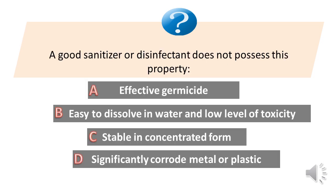A good disinfectant does not possess this property. A. Effective germicide. B. Easy to dissolve in water and low level of toxicity. C. Stable in concentrated form. D. Significantly corrode metal or plastic. Answer is D. Significantly corrode metal or plastic.